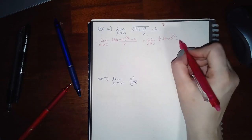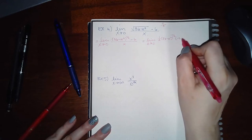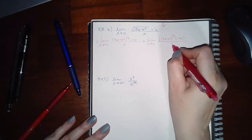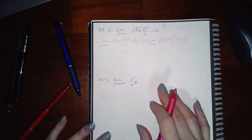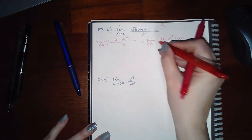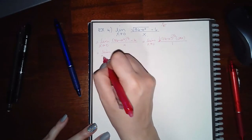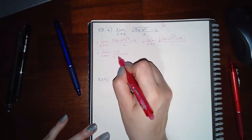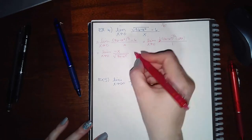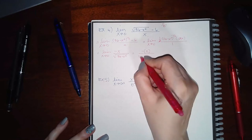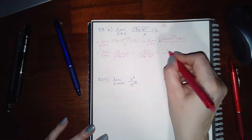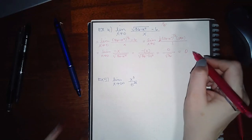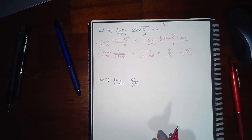Taking the derivative of the numerator using the chain rule: (1/2)(36 - x²)^(-1/2) times (-2x), and the derivative of -6 is 0. The derivative of the denominator x is 1. The 2s cancel, leaving -x over sqrt(36 - x²). Plugging in x = 0 gives -0 over sqrt(36 - 0) = 0 over 6. Zero divided by any nonzero real number is 0, so the limit is 0.